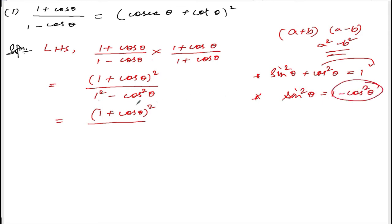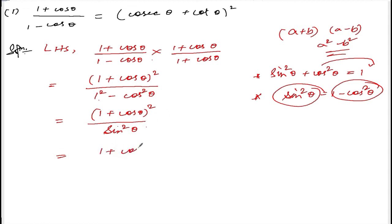So, 1 minus cos square theta can be written down as sin square theta. Write down sin square theta in the denominator. Now, you can write this as 1 plus cos theta divided by sin theta, put in a bracket, whole square.